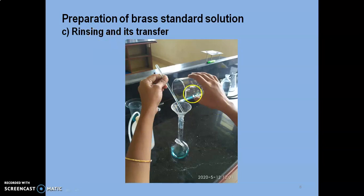The solution in the beaker has to be added to the standard flask by using the glass rod in this way. The beaker and glass rod has to be aligned in such a way, so that the solution will go into the standard flask through the glass rod.